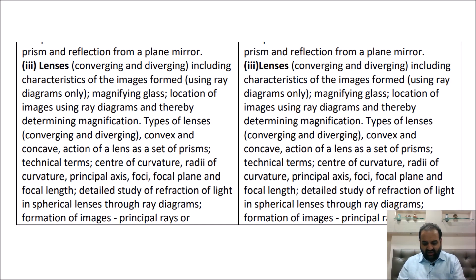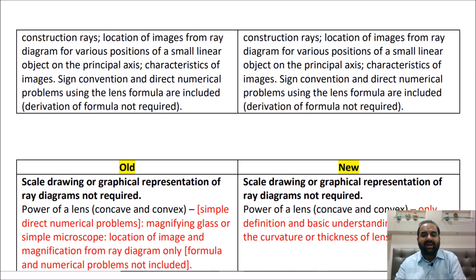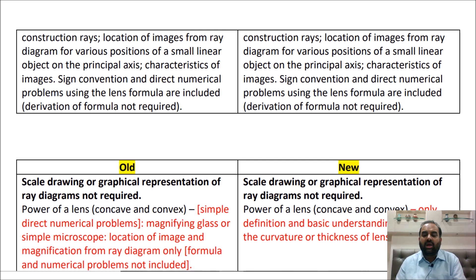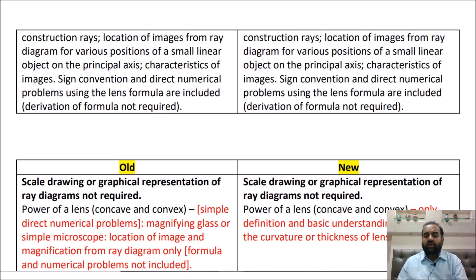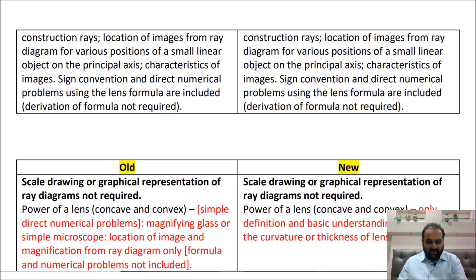In Refraction through Lenses, the A part and B part are entirely there. In the numericals section, the power of lens formula (one upon f) numericals have been removed. Diagrams are to be drawn on a page — no need to draw to scale on a graph. The lens formula is still there.